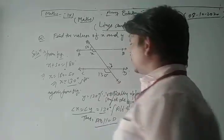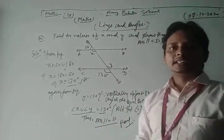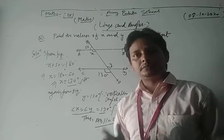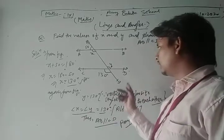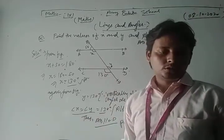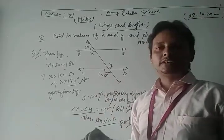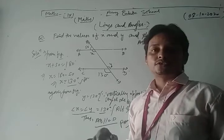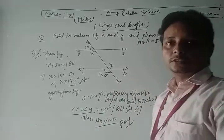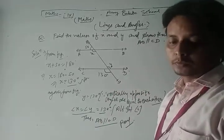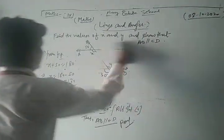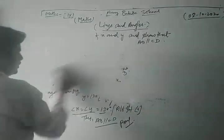In this way we prove that line AB is parallel to line CD because the alternate interior angles are equal to each other. You can solve each and every question of your NCERT exercise based on these topics.